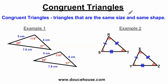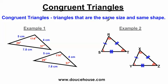Hello everybody, how you doing? This is Mr. Douse. In this lesson, I'm going to talk about congruent triangles. Congruent triangles are triangles that are the same size and same shape. Congruent basically means equal, so we're talking about equal triangles — triangles that are equal or congruent because they have the same size and same shape.